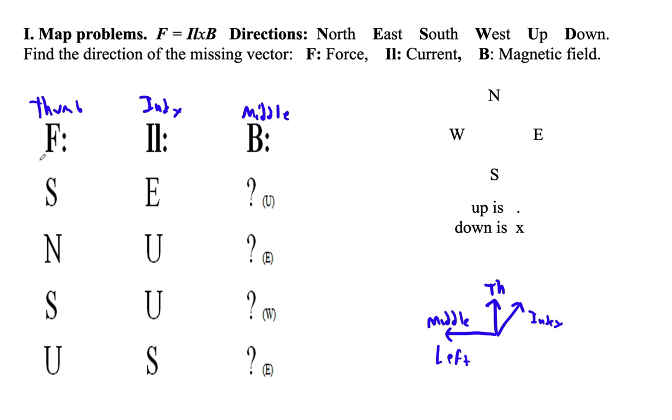So let's do this first one. First, my thumb has got to point down the page. My index finger now has to point east, and my middle finger, if I do this properly, my middle finger is pointing out of the page, which is vertically upward.